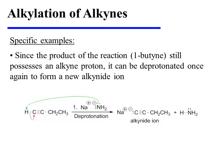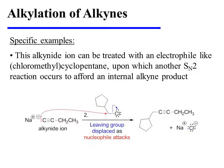Since the product of the preceding reaction — namely 1-butyne — still possesses an alkyne proton, it can be deprotonated once again to form a new alkynide ion. This alkynide ion can be treated with an electrophile, such as chloromethyl cyclopentane, upon which another SN2 reaction occurs to afford an internal alkyne as the ultimate product.